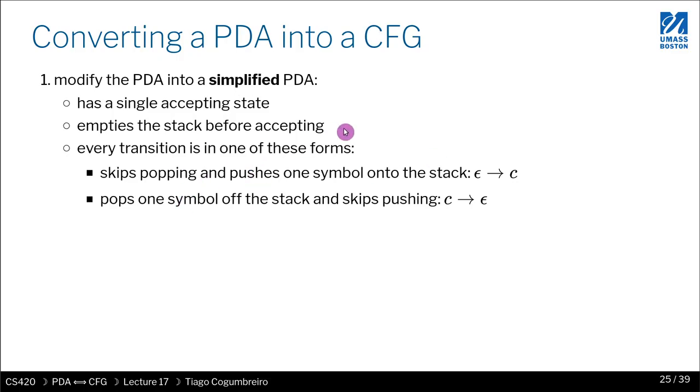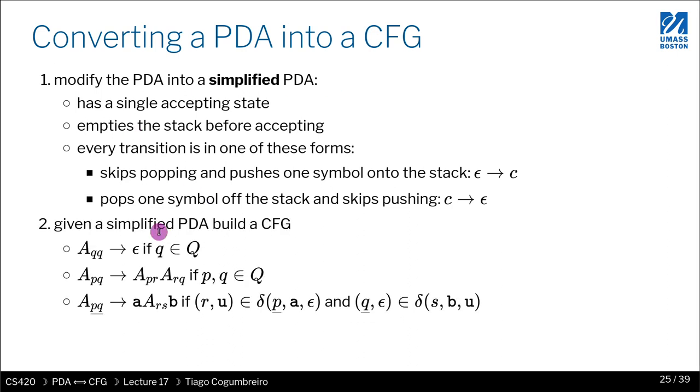The basic idea is the algorithm takes a PDA and converts it into a simplified PDA. We're going to understand a bit better what is a simplified PDA. Then what we're going to do is take that simplified PDA, which is equivalent to the original one, and according to some rules, generate a grammar. According to the edges of the PDA, we're going to generate a grammar.